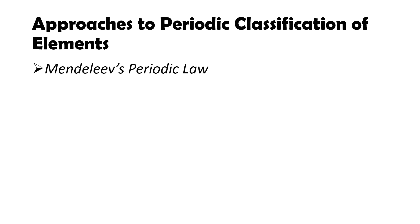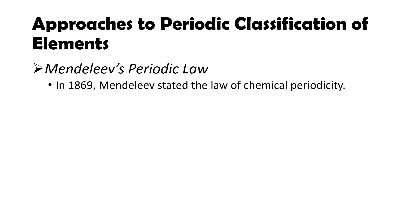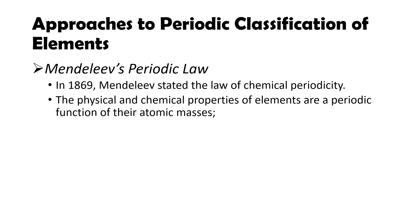Then came Mendeleev's Periodic Law in 1869. Mendeleev stated the law of chemical periodicity: the physical and chemical properties of elements are a periodic function of their atomic masses. When elements are arranged in increasing order of their atomic masses, elements with similar properties are repeated after certain regular intervals. This is called Mendeleev's Periodic Law.